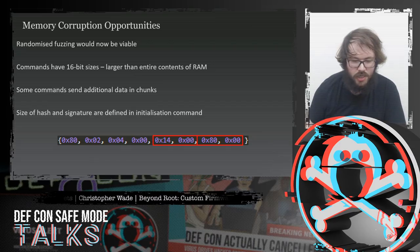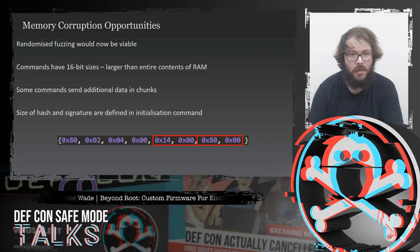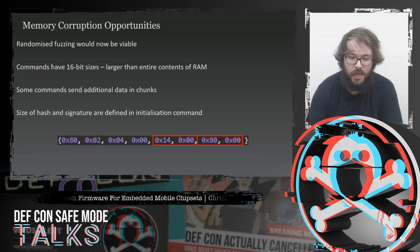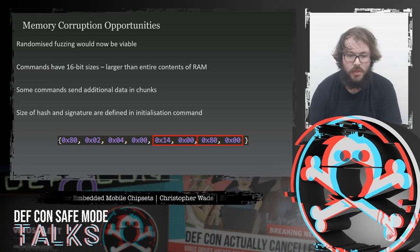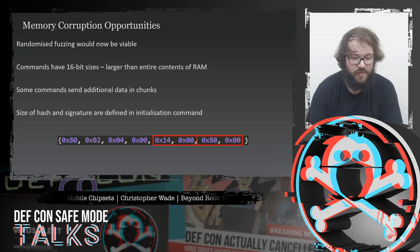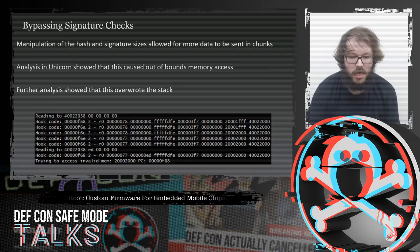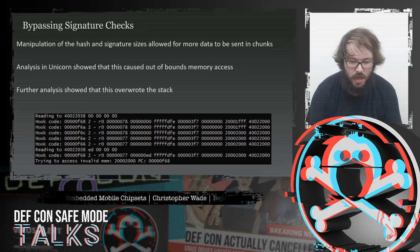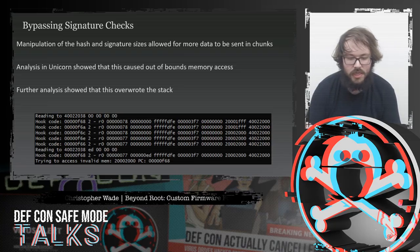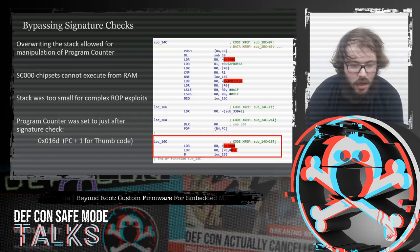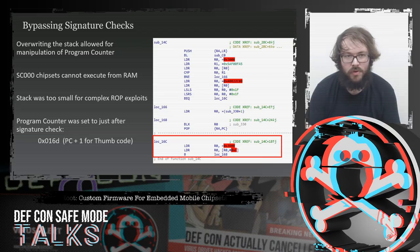I wanted to find memory corruption exploits to bypass signature checking. Initial randomized fuzzing didn't yield anything interesting. Commands had 16-bit sizes — larger than the entire 8K RAM — but were limited to 256 bytes. I noticed that some functions, especially for deploying large blocks of data, could send data in 256-byte chunks. The size of the hash and signature were defined at the start of the firmware update process, and I found I could increase both the hash and signature sizes to send more data. When doing this in the emulator, memory eventually went out of bounds — outside the 8K — and overwrote the stack.